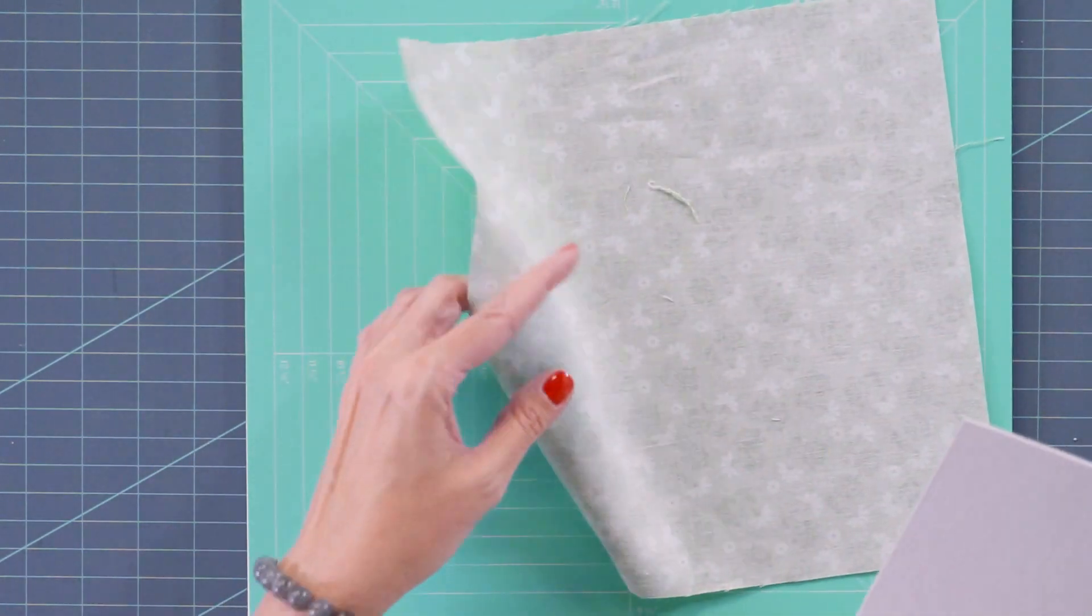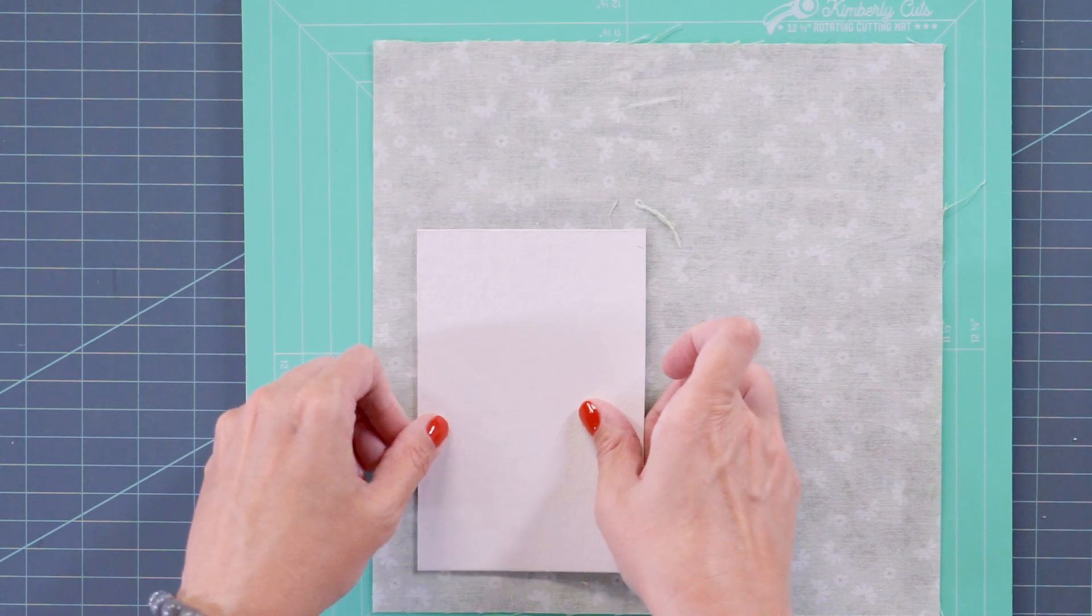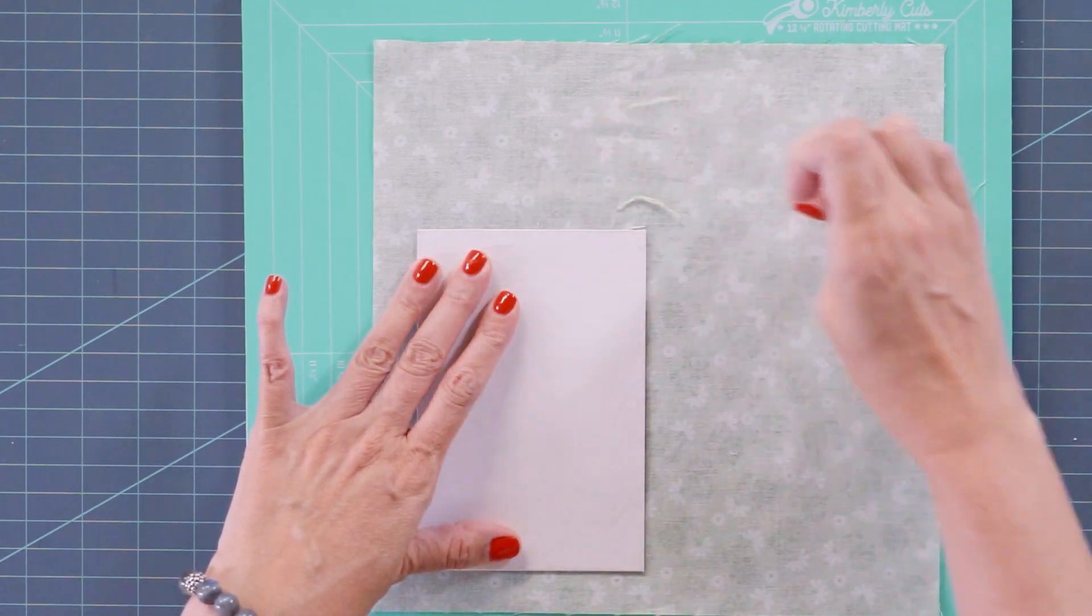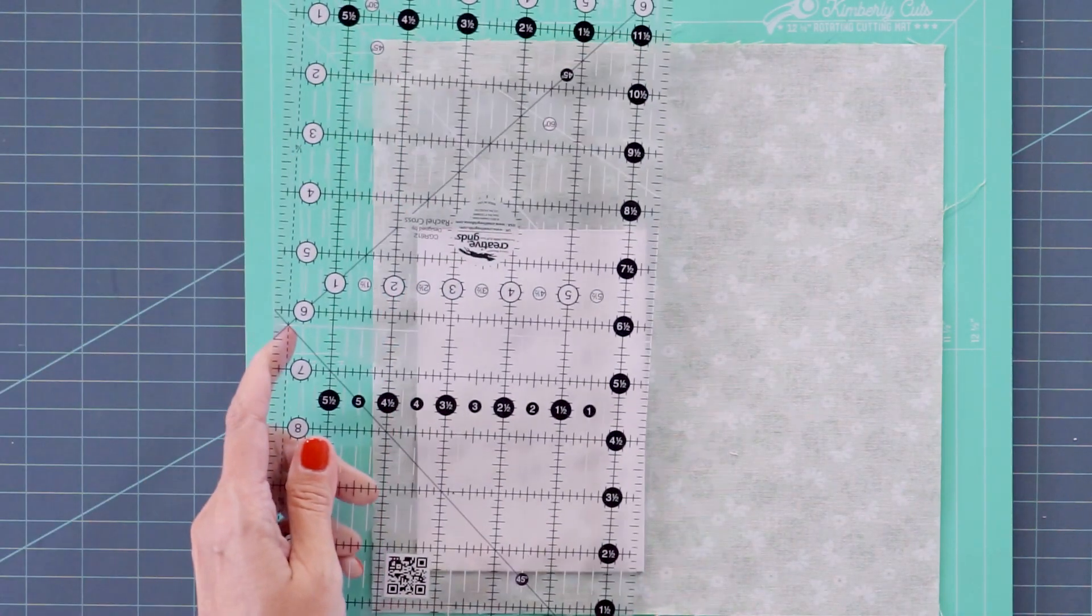So you will just turn your fabric over, place it down. And we just used a scrap of fabric that we had. So any kind of scrap, and we're going to cut about an inch around.